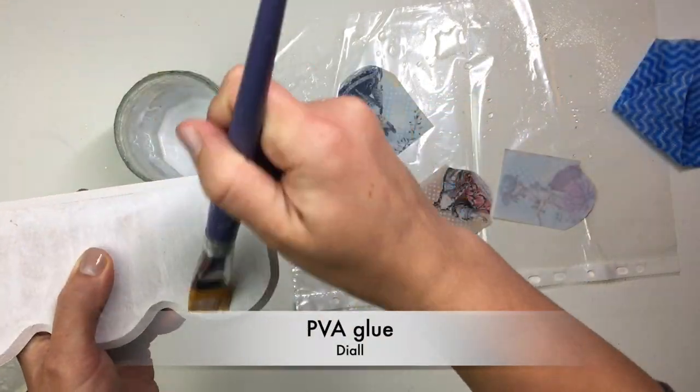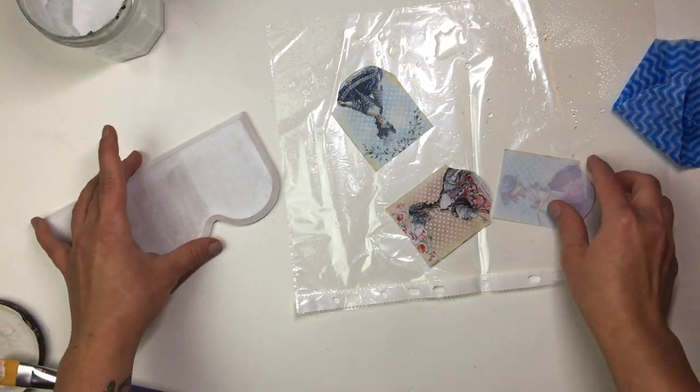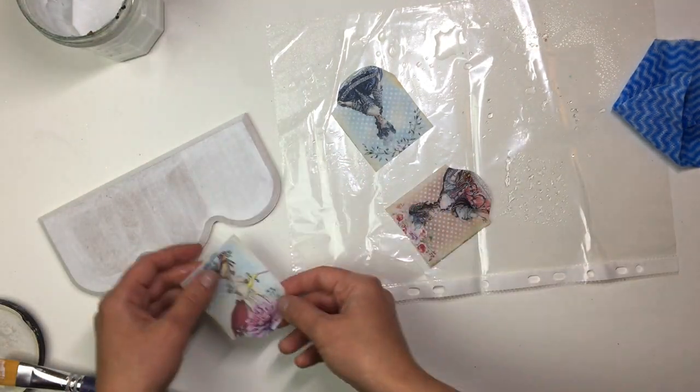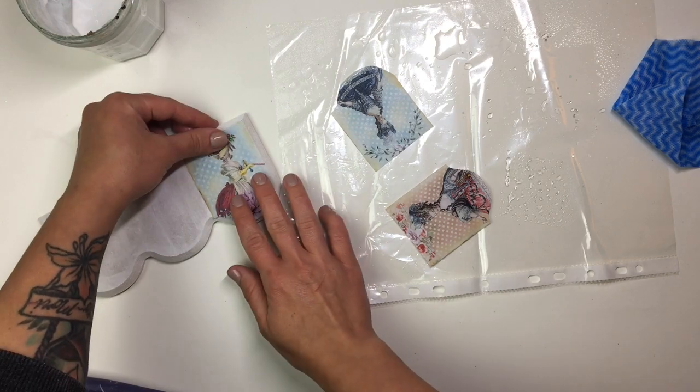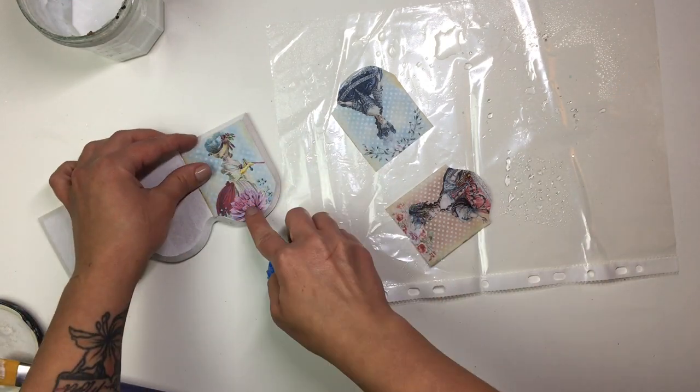Then, to decoupage them on, I actually used my trade grade PVA glue. So, I apply a coat of glue onto where I'm going to apply the first picture, then apply the picture on and I use the cloth and then apply another coat of glue over all of the images.